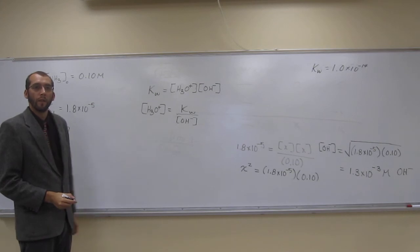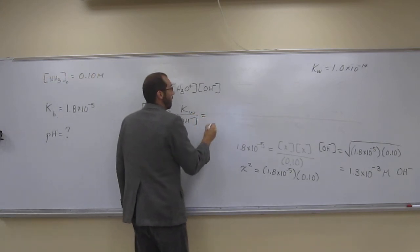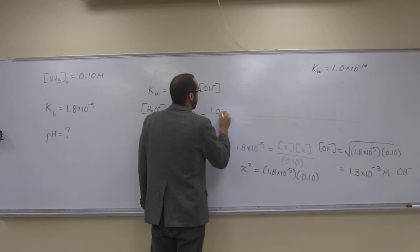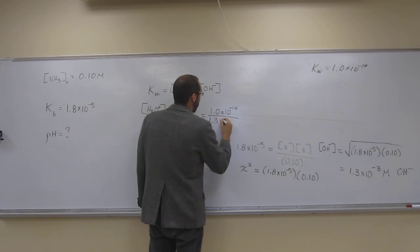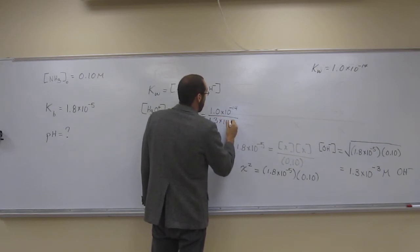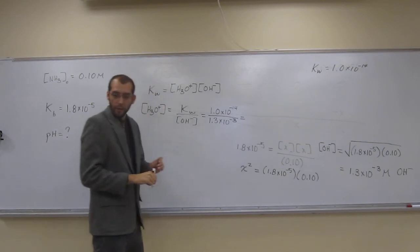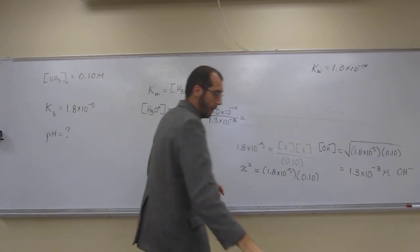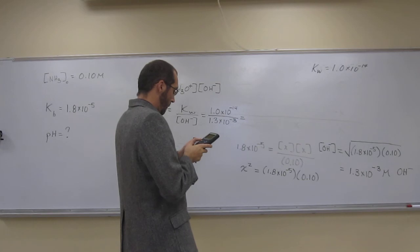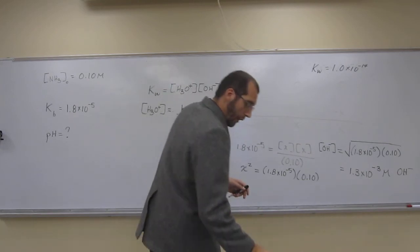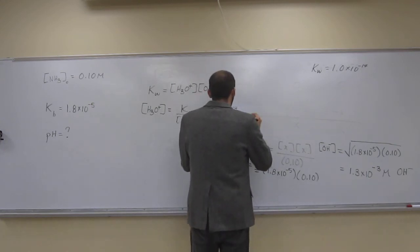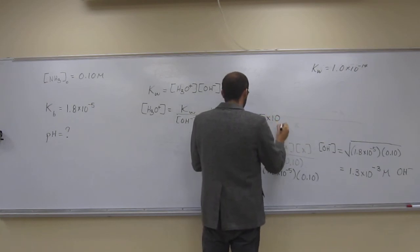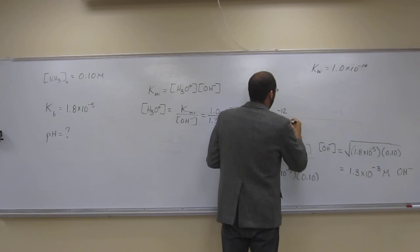Does that make sense? So what do we got? 1.0 times 10 to the negative 14 divided by 1.3 times 10 to the negative third. So 1E negative 14 divided by the second answer, and I get 7.5 times 10 to the negative 12 molar.